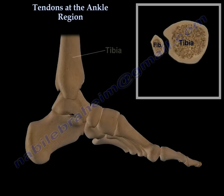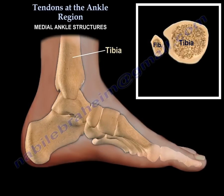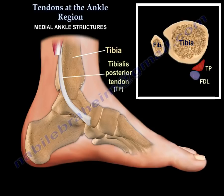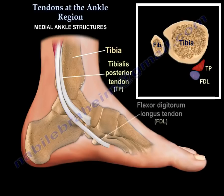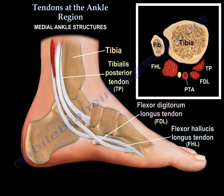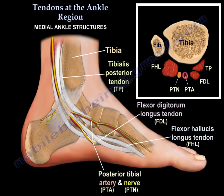How about the medial side, or the medial ankle? We have three tendons: tibialis posterior, the flexor digitorum longus tendon, and flexor hallucis longus. Here you can see the posterior tibial artery and nerve.